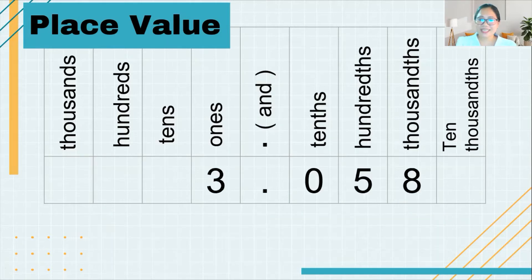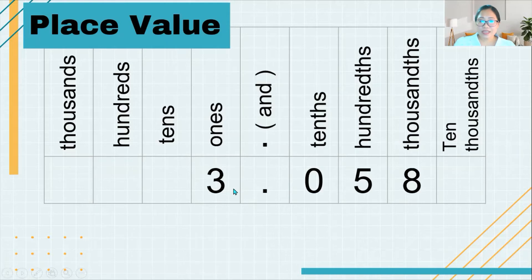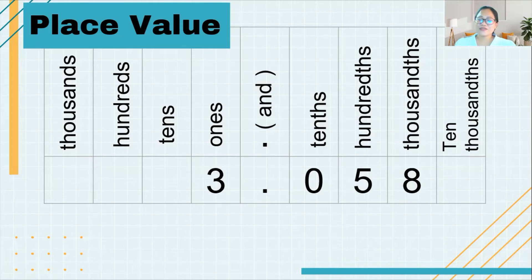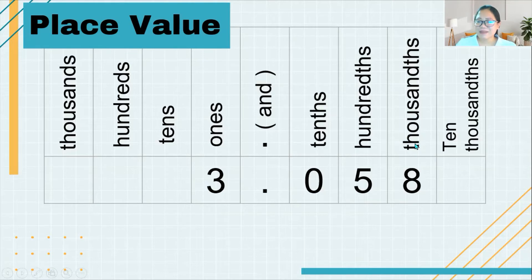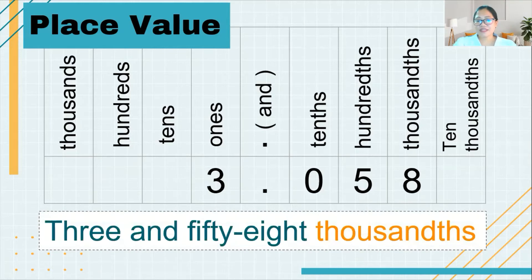Now let's proceed to our next example. In the ones place we have the number 3, so we say 'three and.' Since the next digit is zero, we don't need to say it because it has no value. So we go directly to the next number after zero, which is 5 — we say 'fifty-eight.' Then we say the place value of the last digit, which is 8, and 8 is in the thousandths place. So this number is read as 'three and fifty-eight thousandths.'